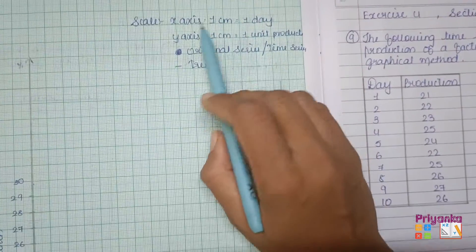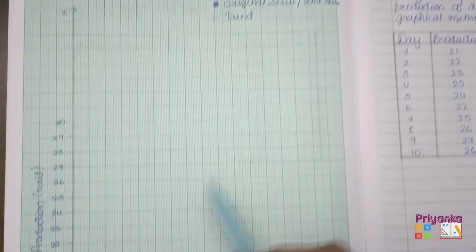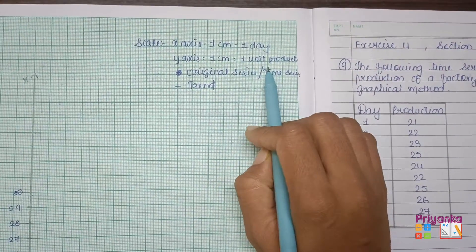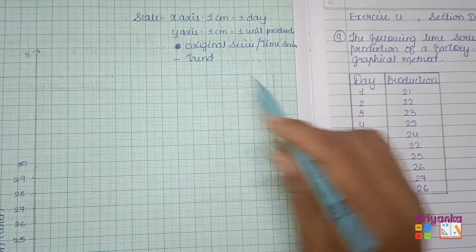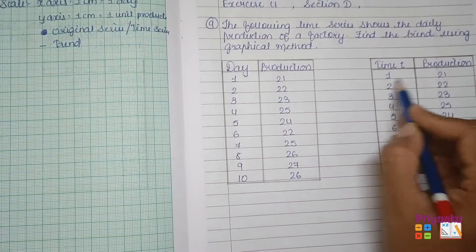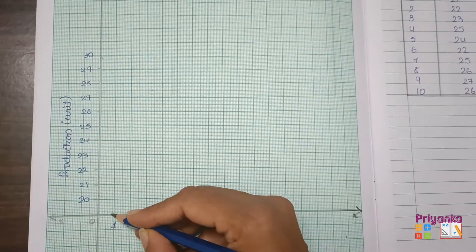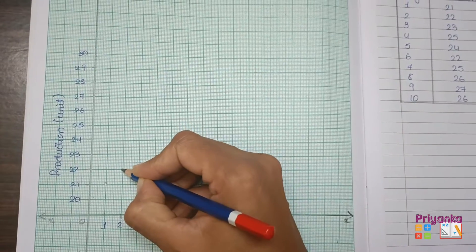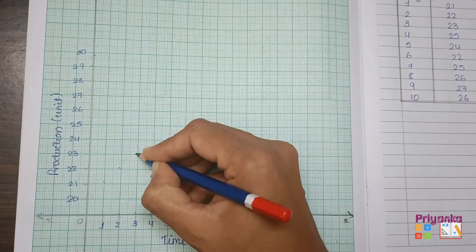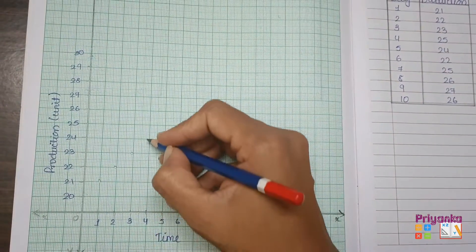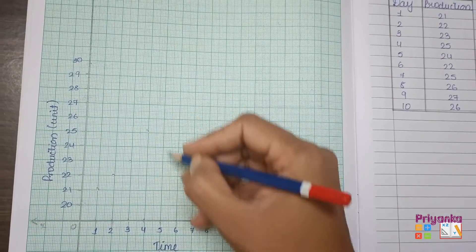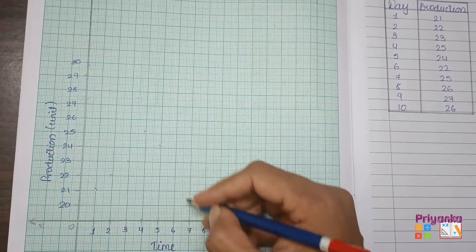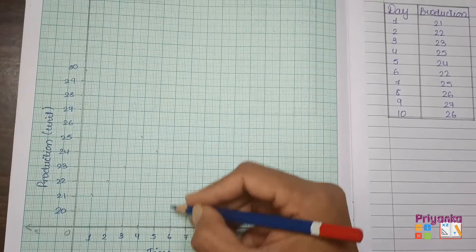Don't forget to write down the scale. On x-axis, I kept the 1 cm for showing the days and the y-axis 1 cm, 1 unit of production. So first we will mark: for time 1 the production is 21, for 2 the production is 22, for 3 the production is 23, for 4 the production is 25, for 5 production is 24.